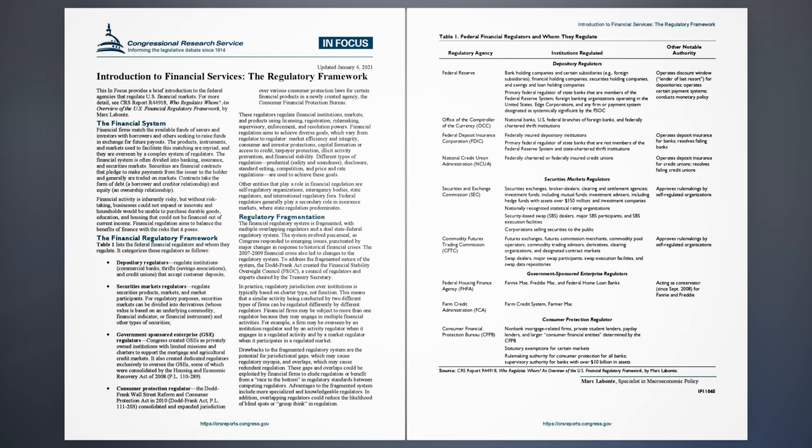Financial firms may be subject to more than one regulator because they may engage in multiple financial activities. For example, a firm may be overseen by an institution regulator and by an activity regulator when it engages in a regulated activity, and by a market regulator when it participates in a regulated market. Drawbacks to the fragmented regulatory system include the potential for jurisdictional gaps, which may cause regulatory myopia, and overlaps, which may cause redundant regulation. These gaps and overlaps could be exploited by financial firms to elude regulation or benefit from a race to the bottom in regulatory standards. Advantages include more specialized and knowledgeable regulators, and overlapping regulators could reduce the likelihood of blind spots or groupthink in regulation.